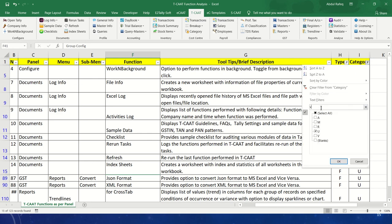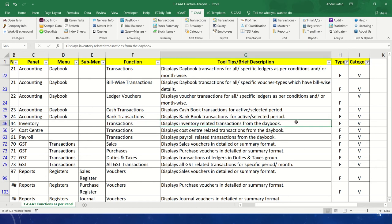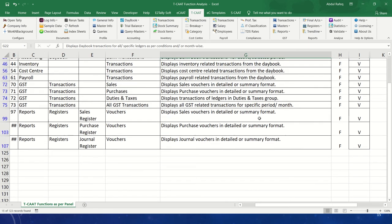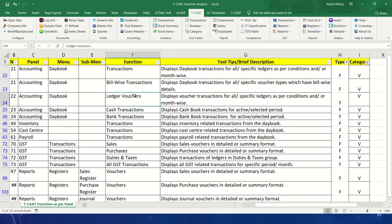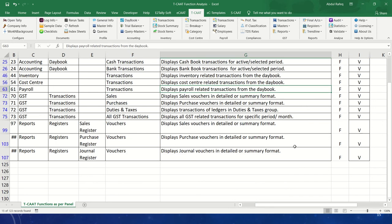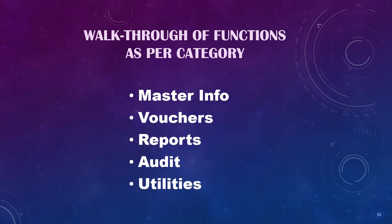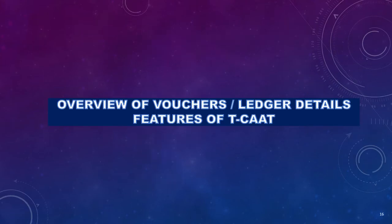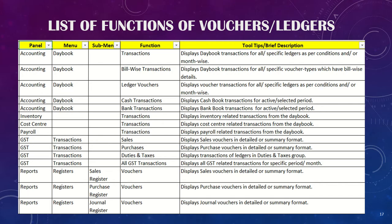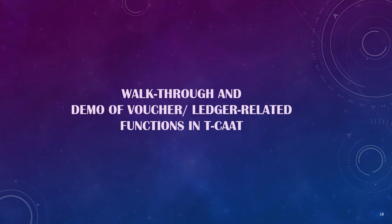Now we come to the vouchers or ledger related functions. There are totally 15 functions — transactions, bill-wise transactions, ledger vouchers, and others — which we will cover in this presentation. For each function, we are given the panel, menu, and where it is and what it can perform. Let's have a walkthrough and demo of the voucher or ledger related functions in TCAT.